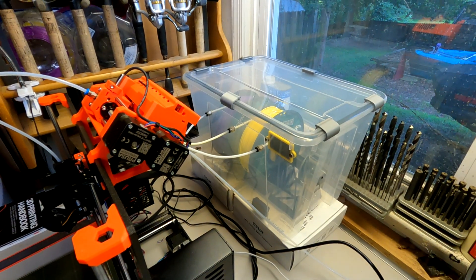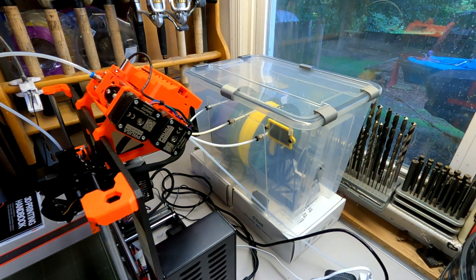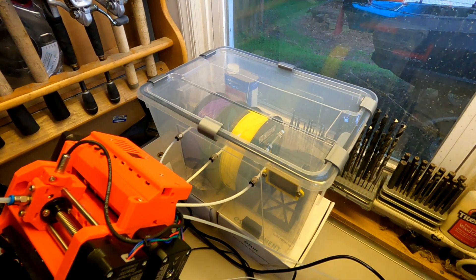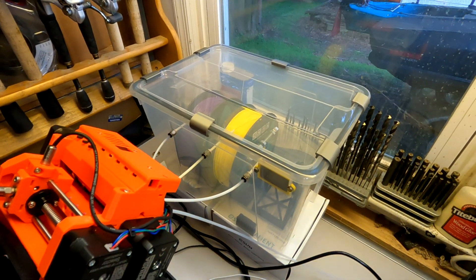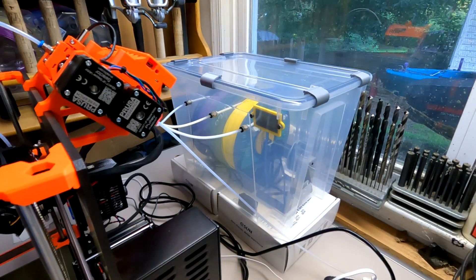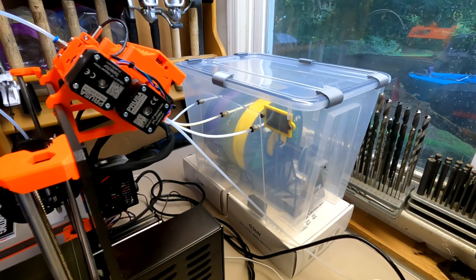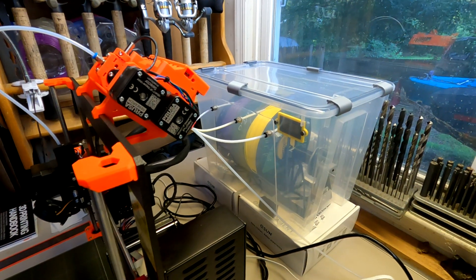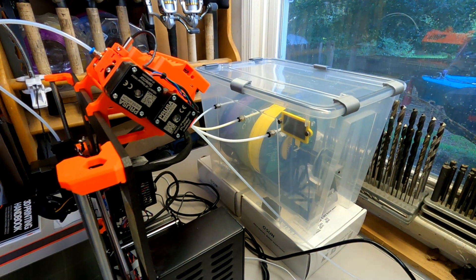This box is an IKEA Samla container. It's big enough to hold three spools on retractable spool holders and can control the humidity inside the box so that I can keep my filaments in there permanently and they'll be dried out by some silica gel packages.